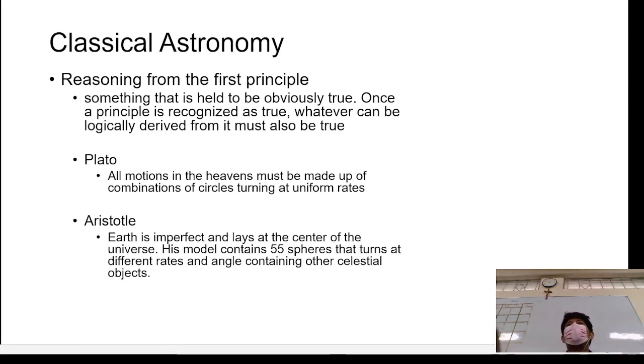This theory was pioneered by two of the most famous philosophers at their time. Well, until now, they are still famous. Plato and his student Aristotle. So they said that all motions in the heavens must be made up of combinations of circles turning at uniform rates.